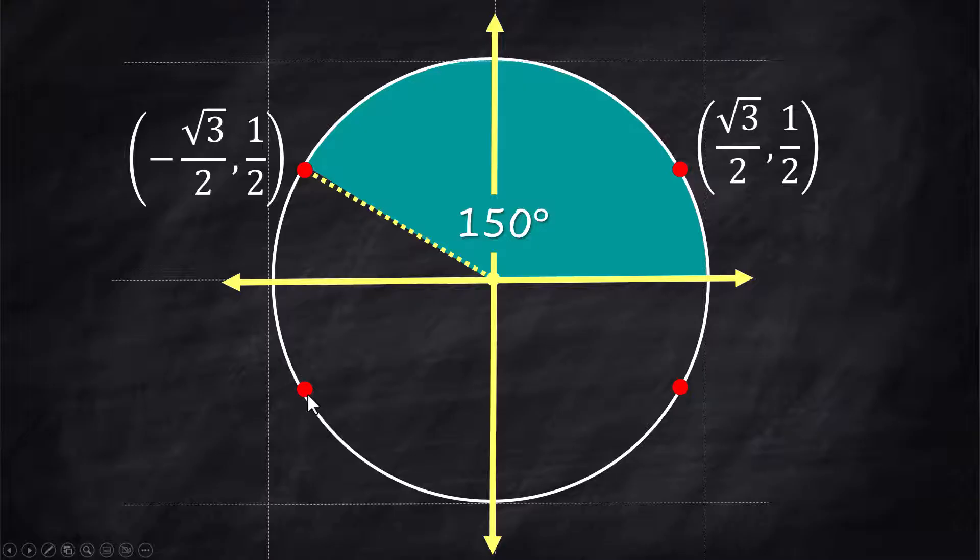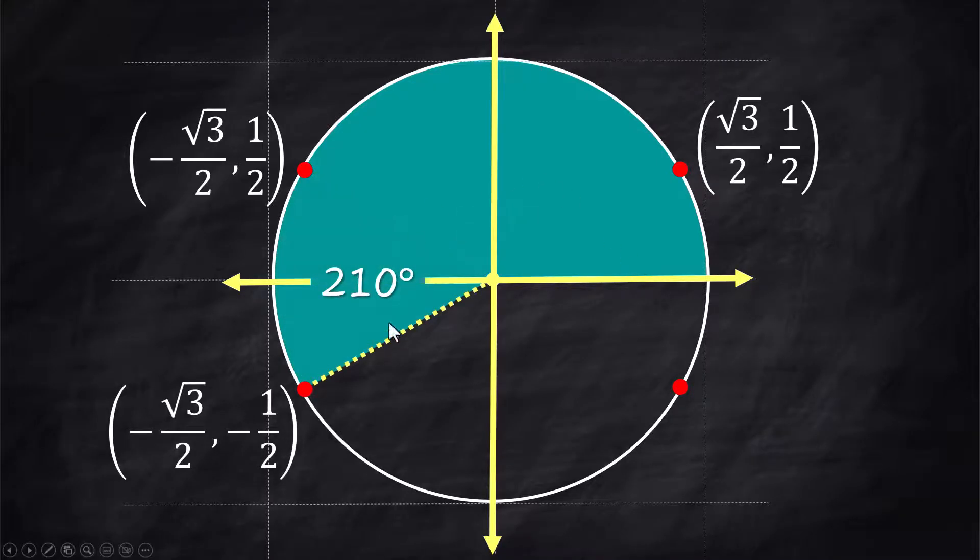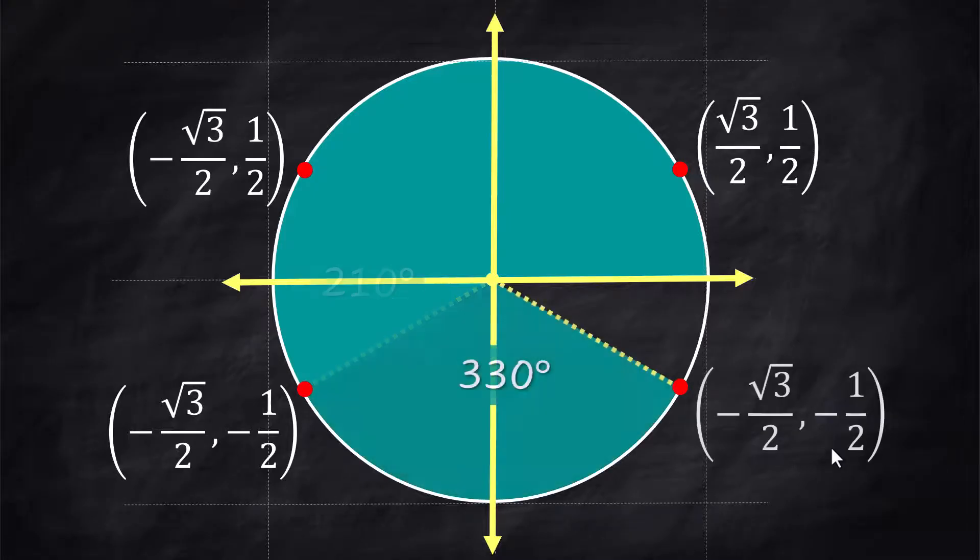You go down to third quadrant, it's going to be the same numbers. It's just that everything's negative down here. The angle is 210 degrees, but the coordinates are both negative. Same numbers, just the signs have to change. Moving over to fourth quadrant.